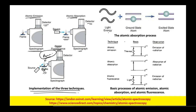The basic principle: if there is light energy and the atom is in the ground state, it will go to the excited state, resulting in absorption of visible light. The basic processes are atomic emission, atomic absorption, and atomic fluorescence.